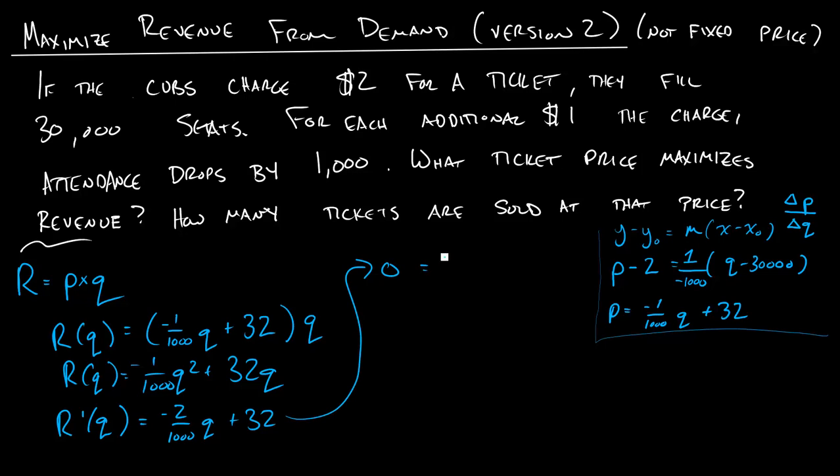And so if you set that equal to 0, you'll be able to solve. I'm going to simplify negative 2 over 1,000 to negative 1 over 500 Q plus 32. And so Q is going to be equal to 32 times 500, which is 16,000.